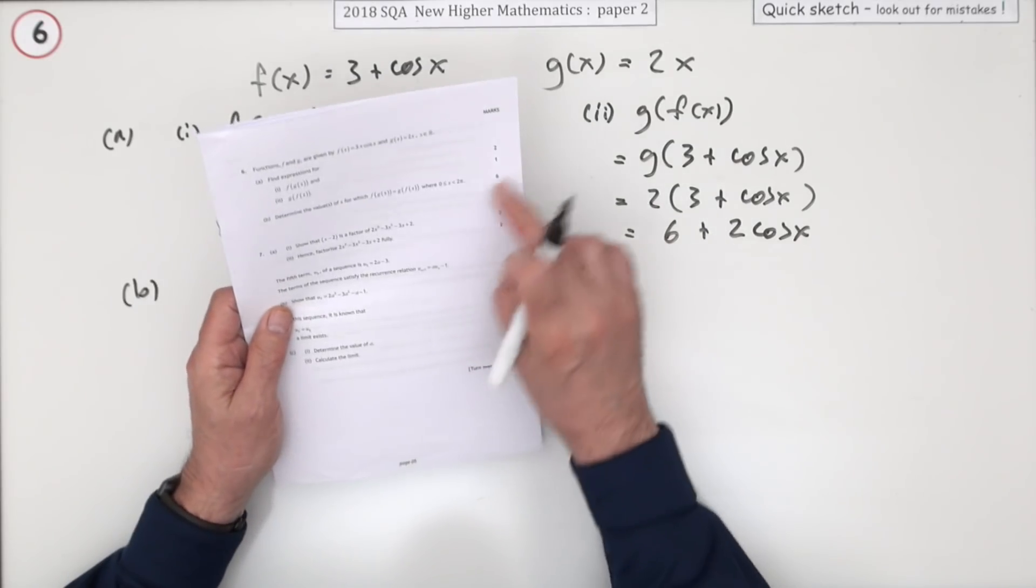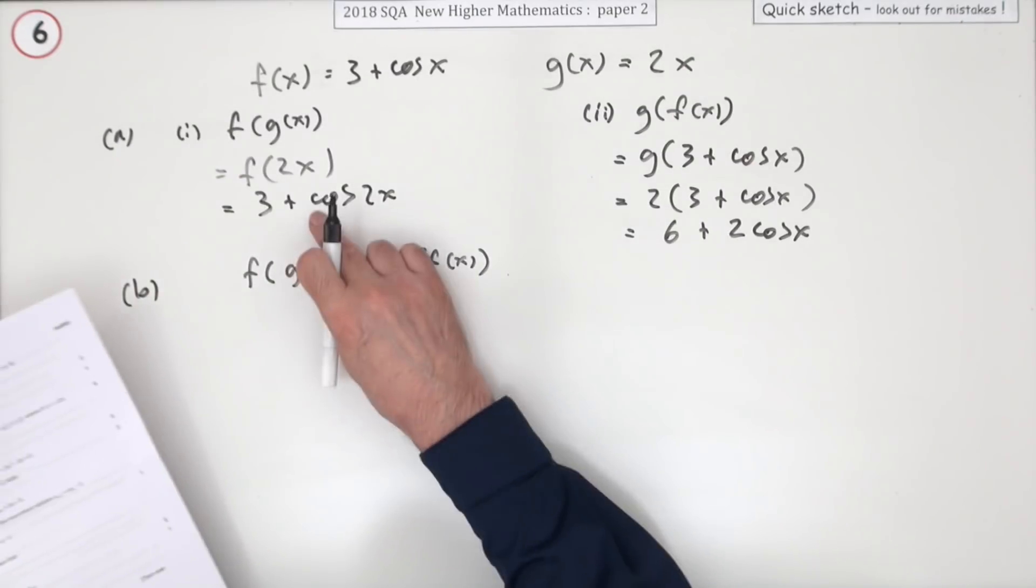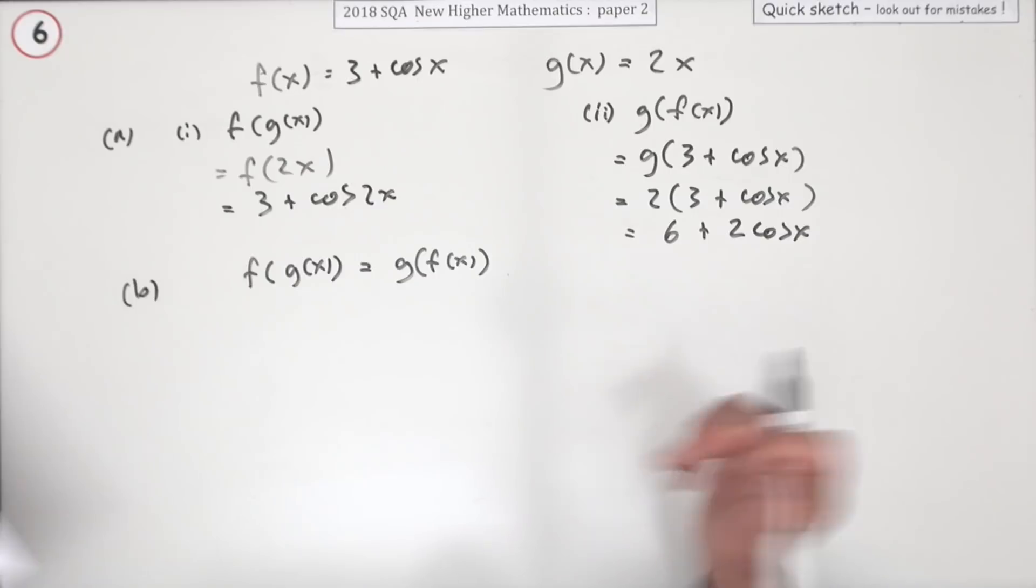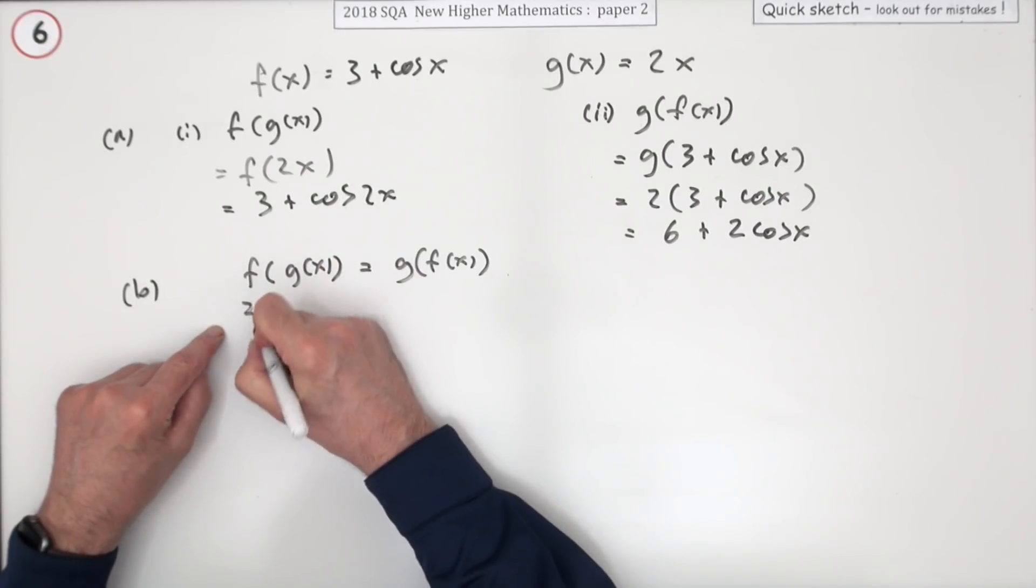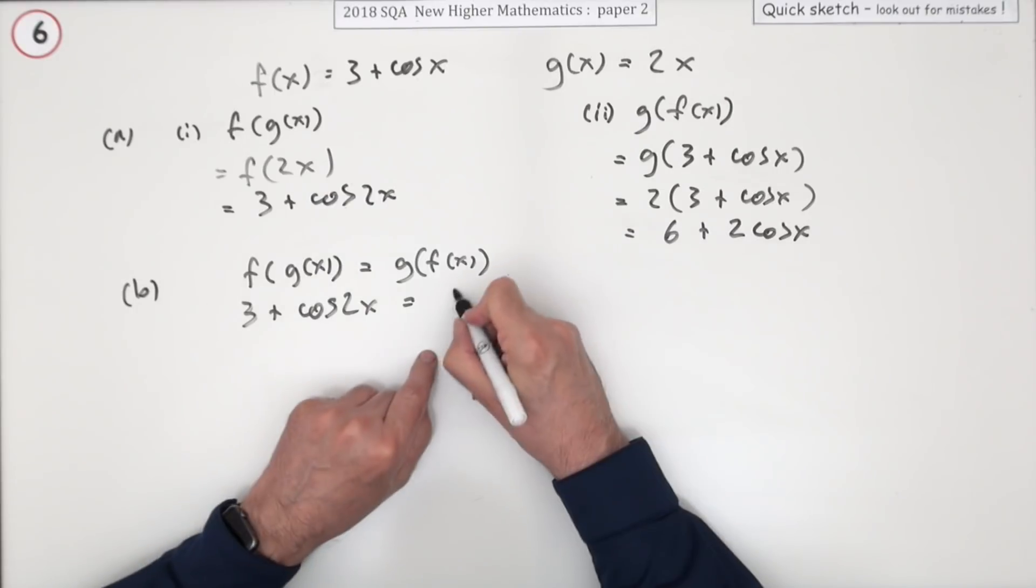And then the big part, six marks: determine the value or values for which the first one is equal to the second one. So you just make the first one equal to the second one.